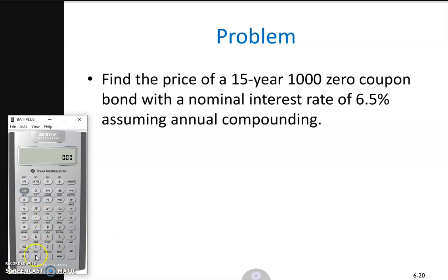Now let's start. N equals 15, so enter 15 and press N, setting the time to maturity equal to 15. I/Y equals 6.5, so enter 6.5 and press I/Y. The financial calculator does not expect 6.5% or 0.065, just 6.5 is sufficient.